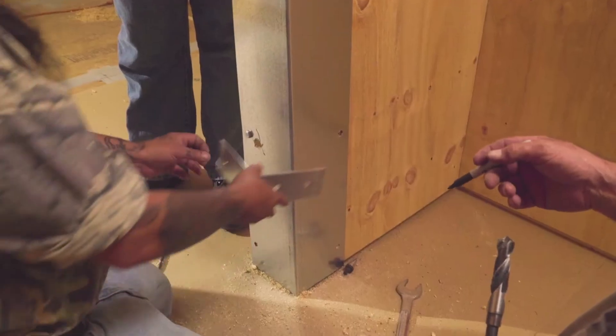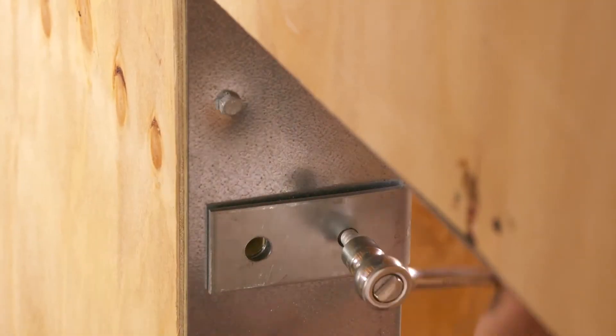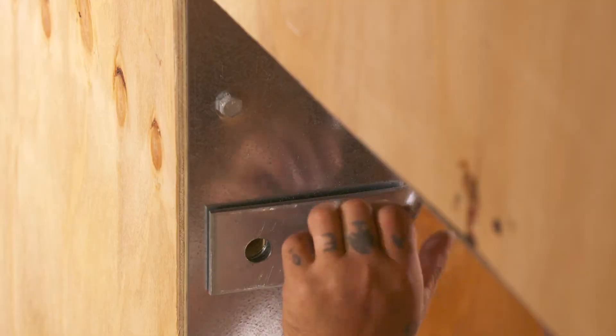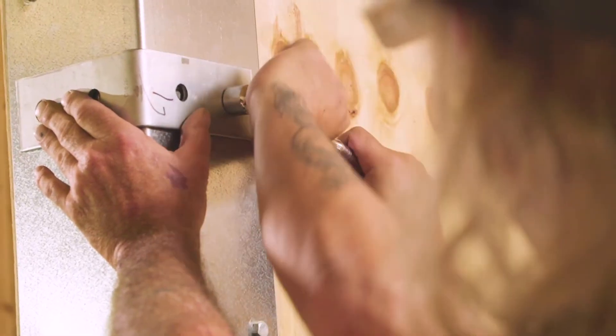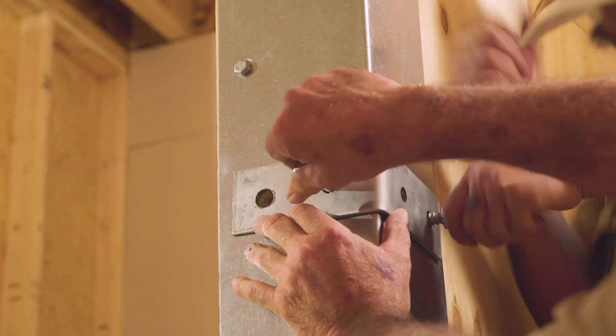Install three Simpson Strong-Tie HL53 heavy angles on the door jamb on top of the 14-gauge sheet metal angles to reinforce the slide bolt gate latch. Bolt each angle onto the jamb using bolts installed on the room's interior wall.